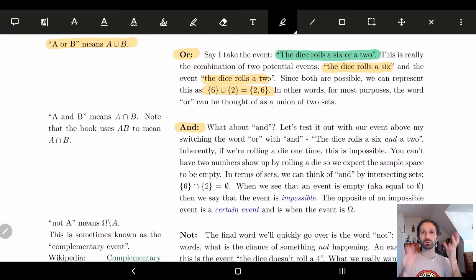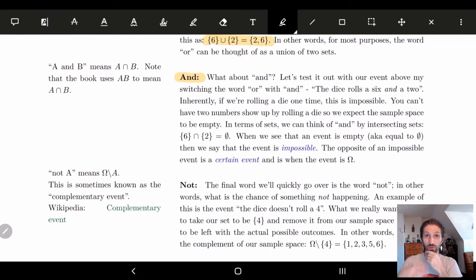Okay, so next up, how about the word 'and'? Well, when we think about 'and', we want this thing and this thing to happen simultaneously, to happen at the same time, right? So let's test it out with an event from above. The dice rolls a six and a two. Now, think about this. If I take a dice and I roll it, what's the chances that it's going to have a six and a two on top? Well, it's going to be impossible, right? There's no way I can roll a six and a two when I just roll a die one time. It's not happening. And so in this case, because the two objects are distinct from one another, they're going to be impossible.